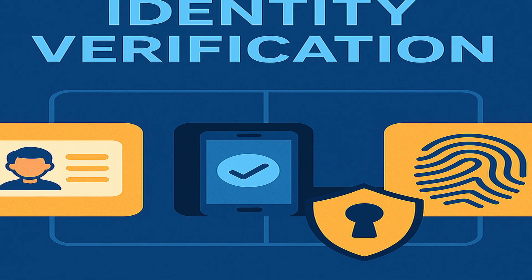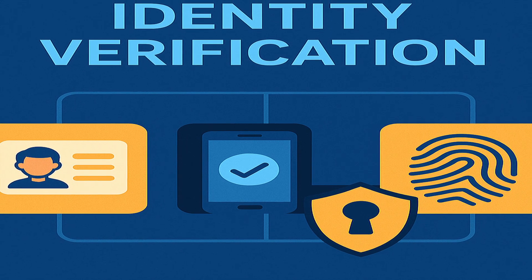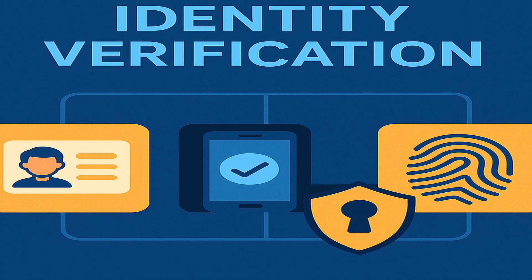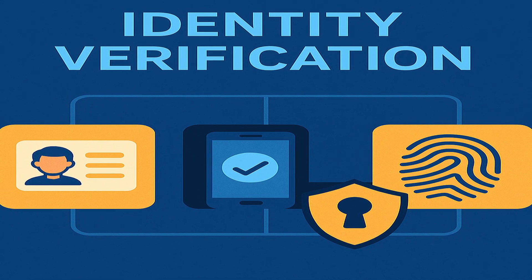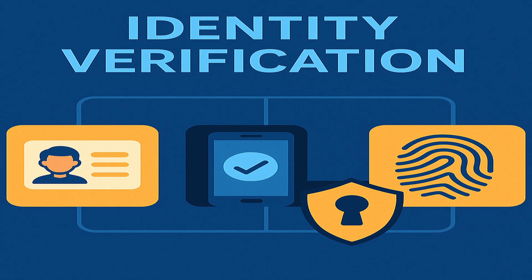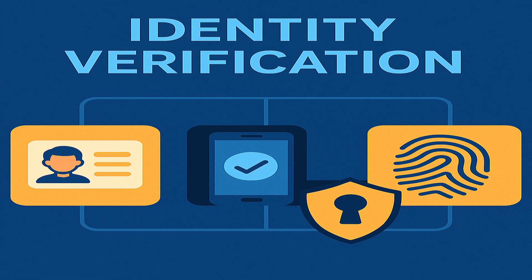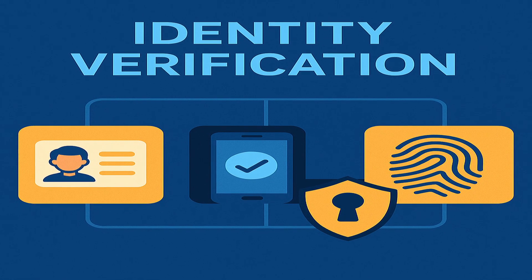Let's look at an example: logging into a system with a password — something you know — and entering a code from your phone — something you have. Using multiple factors makes it harder for an attacker to gain access, even if one piece of information is compromised. So now that we've verified who we are, the next question is: what are we allowed to do on this system once we've authenticated? This is where authorization comes in.